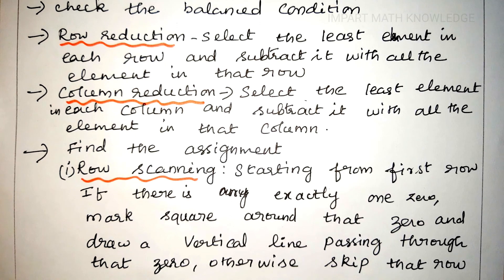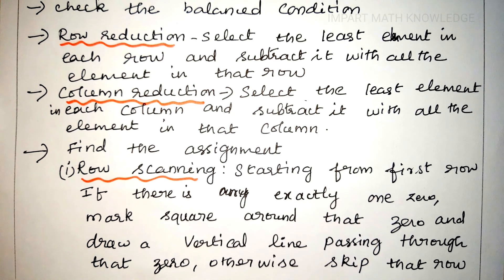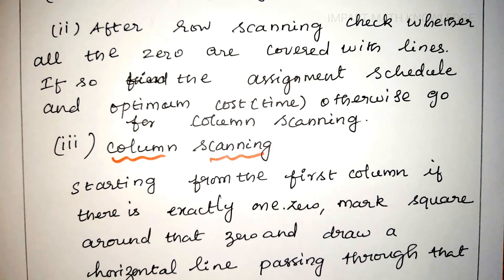After row reduction and column reduction, we have to find the assignment. For that, we go for row scanning. Starting from the first row, if there is exactly one zero, mark a square around that zero and draw a vertical line passing through that zero. Otherwise, skip that row. After row scanning, check whether all zeros are covered with lines. If so, find the assignment schedule and the minimum processing time or cost.